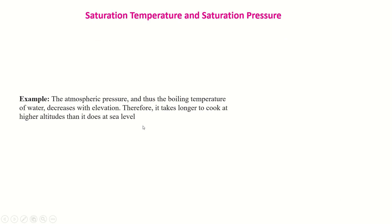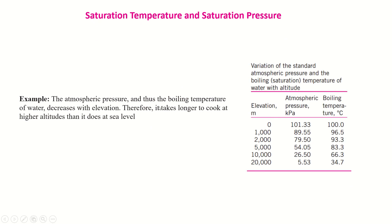I have given you an example that atmospheric pressure is decreasing due to height. This table is showing us that at 5000 meter elevation, normally in the mountains we are at 5000 meter elevation, and the pressure is reduced from 101 kilopascal to 54 kilopascal, and its boiling temperature therefore is also decreased from 100 degrees to 83 degrees.